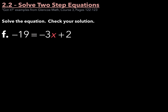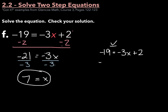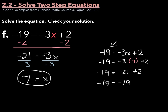Example F: negative 19 equals negative 3x plus 2. We need to get x alone, so subtract 2 from both sides. Negative 19 minus 2 is negative 21, equals negative 3x. Next, divide by negative 3 on both sides. Negative 21 divided by negative 3 is simply 7, so x equals 7. To check, rewrite the original equation: negative 19 equals negative 3x plus 2. Substitute 7 for x — negative 3 times 7 is negative 21, plus 2 is negative 19. Negative 19 equals negative 19, so x equals 7.